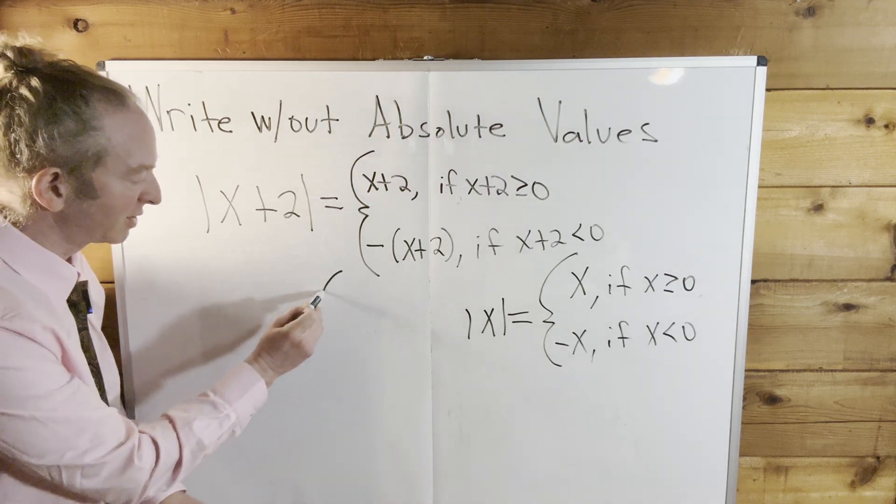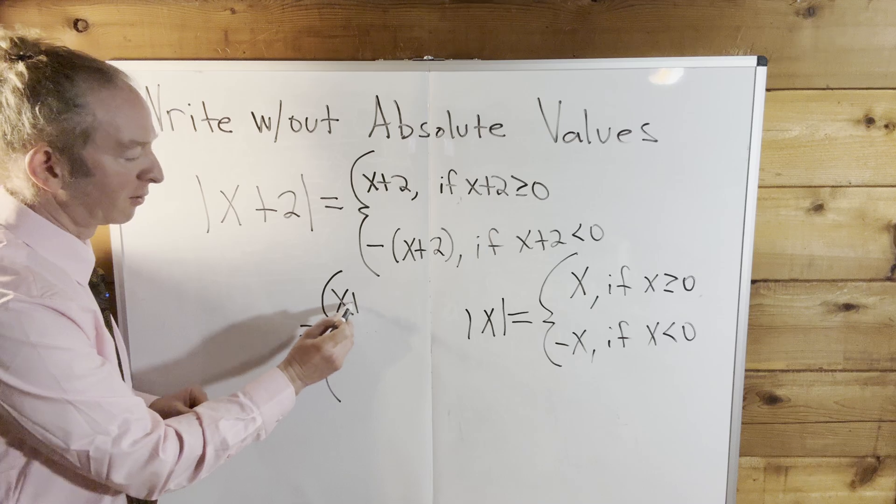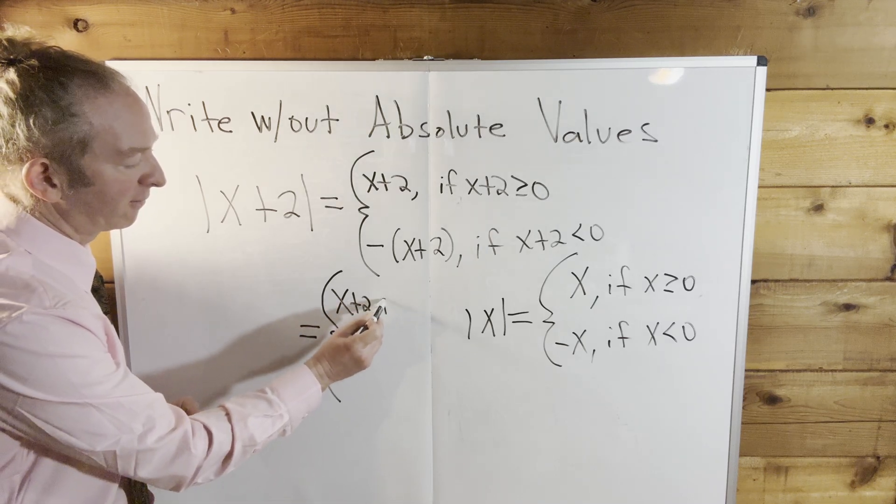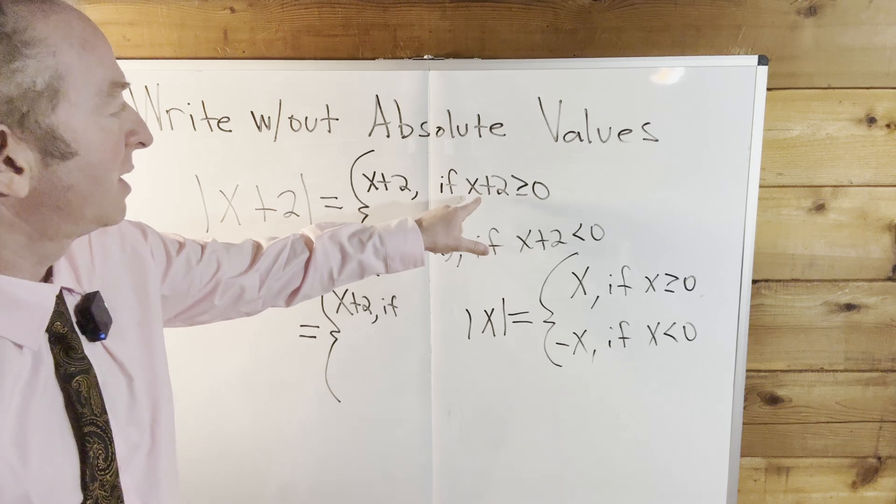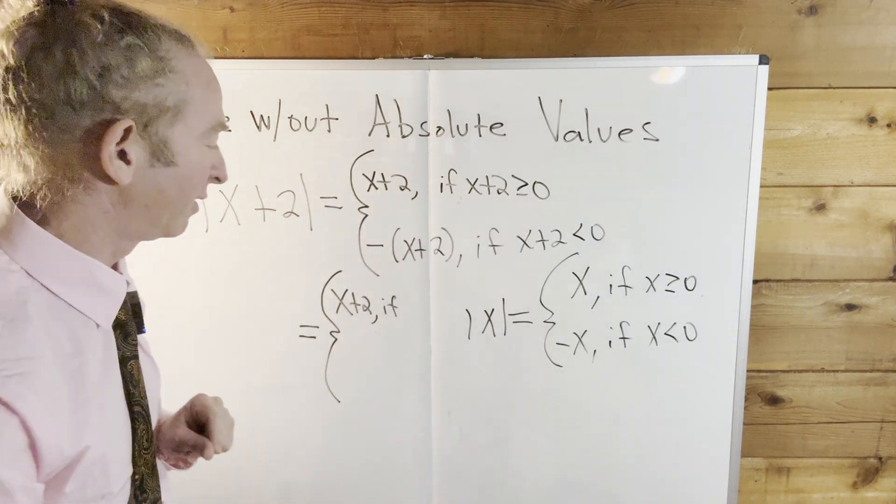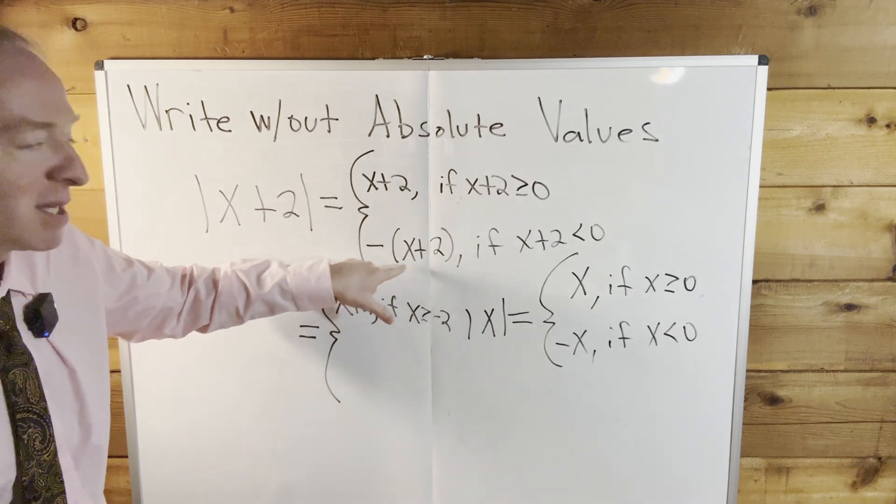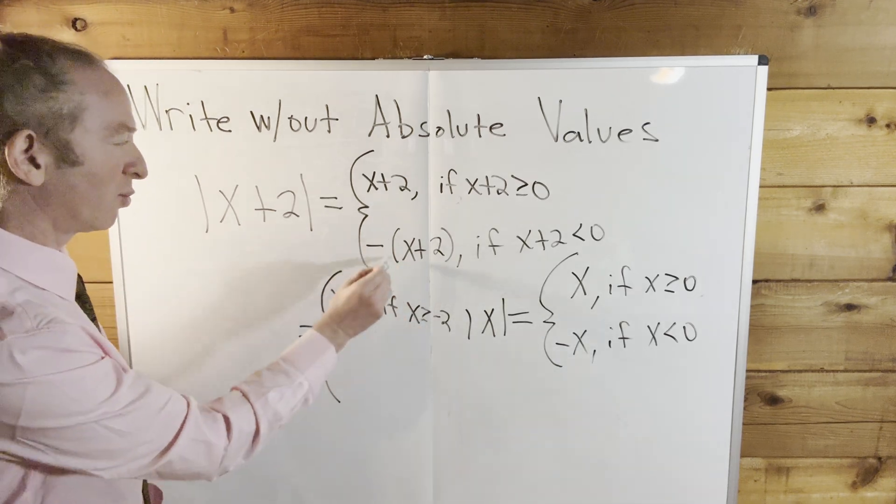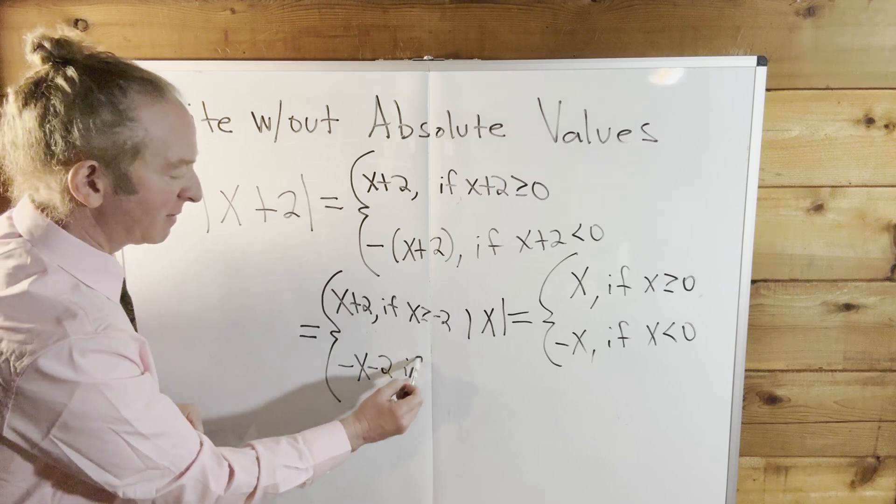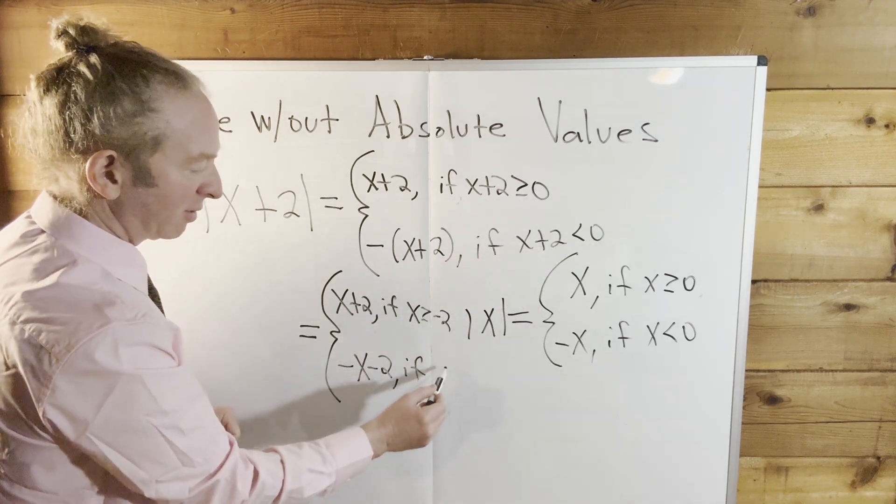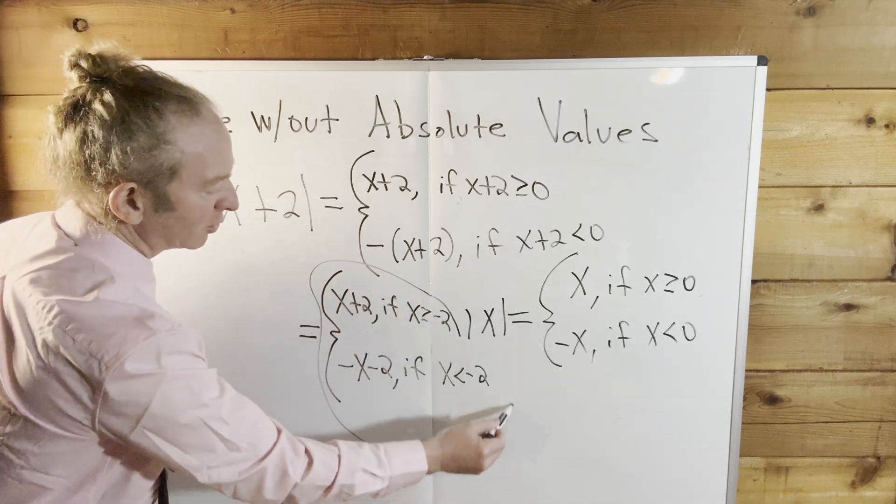So it'll be x plus 2 if, and then we can subtract 2 from both sides. So it'll be x greater than or equal to negative 2. And then here it'll be minus x minus 2 because there's really a minus 1 here. So minus x minus 2. And that's going to be if x less than negative 2. So this would be the answer.